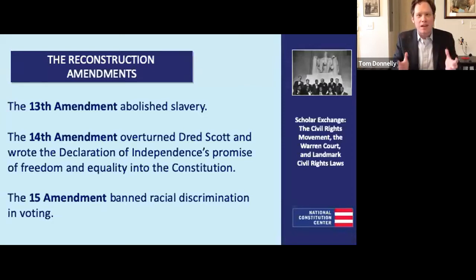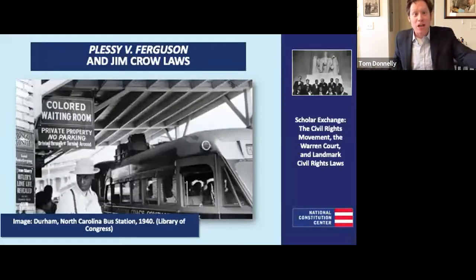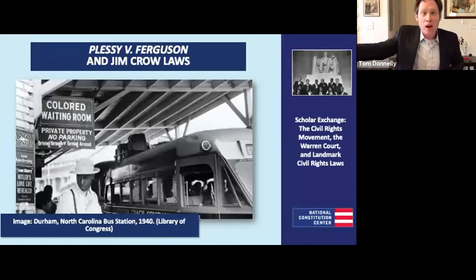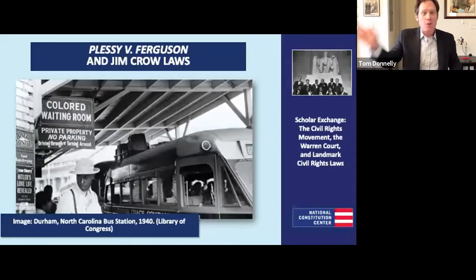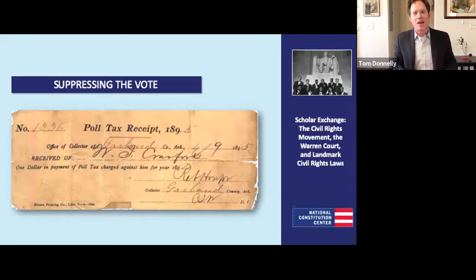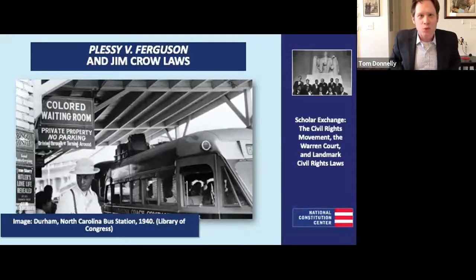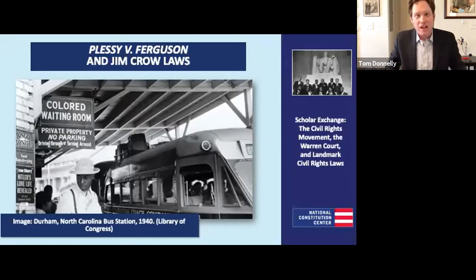Tom Donnelly: What did Jim Crow mean concretely? African Americans were voting in very large numbers in the South. Through a combination of Jim Crow laws like literacy tests, poll taxes, grandfather clauses, and violence, African American voting largely disappeared in the South. We also see a range of laws that enforced the badge of inferiority on African Americans — making them second-class citizens: you can't sit with white people in rail cars, your children can't go to the same schools as white children, you can't drink from the same water fountain, you can't use the same restroom. This combination of laws on the books in the South, combined with white violence against African Americans, enforced this Jim Crow system of second-class citizenship.